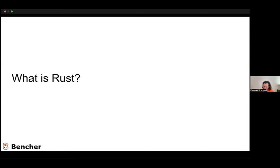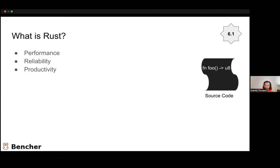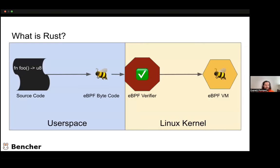What is Rust? Rust is a programming language — it's what you write that source code in. It has a focus on performance, reliability, and productivity. I used to write a lot of C++ and have converted over to Rust and very much enjoy it. I'm excited that in Linux 6.1, it is now part of the build chain for the kernel. But this talk is about writing Rust for the eBPF part of things, not the actual kernel itself.